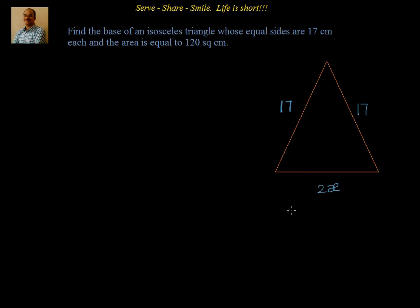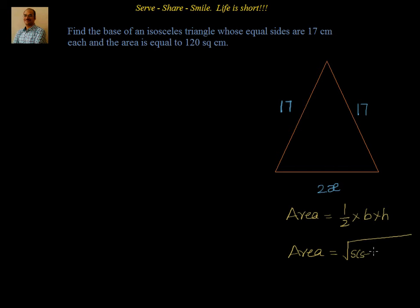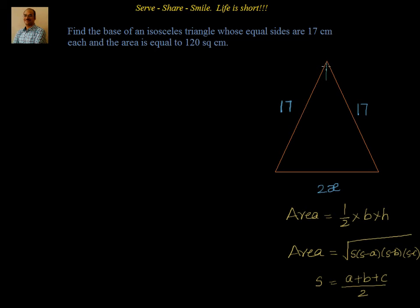What is the formula for area? Area can be obtained in two ways. One: area equal to half into base into height. The other way is by using Heron's formula, which says area equal to √(S·(S−A)·(S−B)·(S−C)), where S, the semi-perimeter, equals the sum of all three sides divided by 2. In this example you can use either approach, but since it is an isosceles triangle, using half base into height is straightforward because the altitude is also the perpendicular bisector.